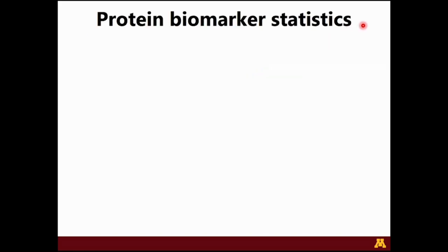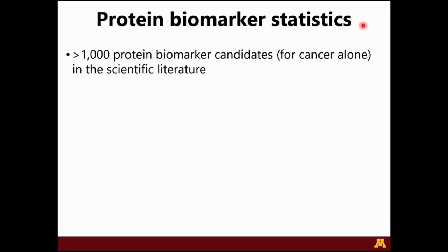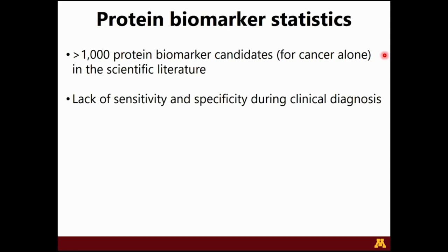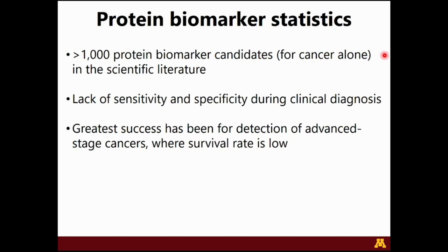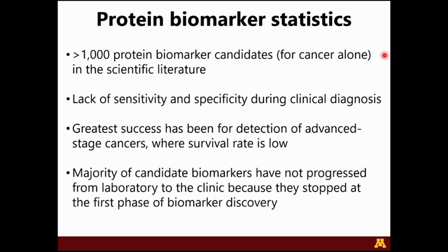Let's look at where we are in terms of protein biomarker statistics. In the scientific literature for cancer alone, there are over 1,000 biomarker candidates — and I want to emphasize the word 'candidates.' A lot of these candidates have not made it through the pipeline to become validated biomarkers because they lack sensitivity and specificity when assessed for clinical diagnosis. The greatest success has been for detection of advanced-stage cancers where survival rates are already low, underscoring the need to focus more effort on early-stage cancer detection.